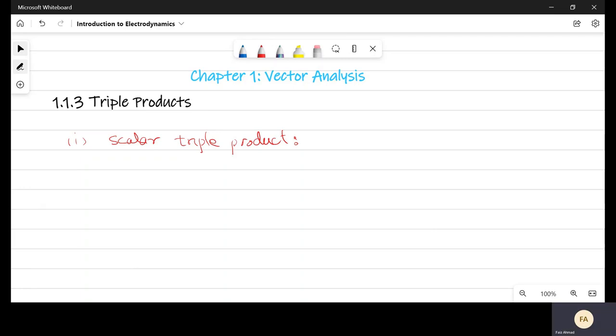So scalar triple product is between any three vectors. We have a vector dotted with cross product of two other vectors and it can be any three vectors and any combination of A, B, C.